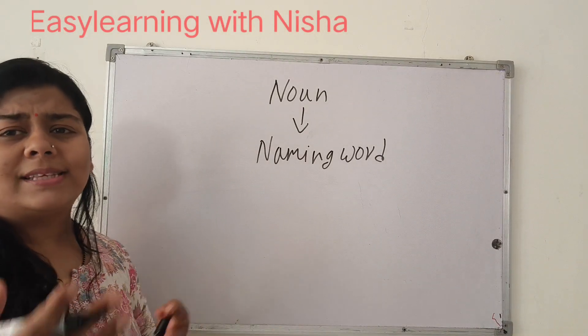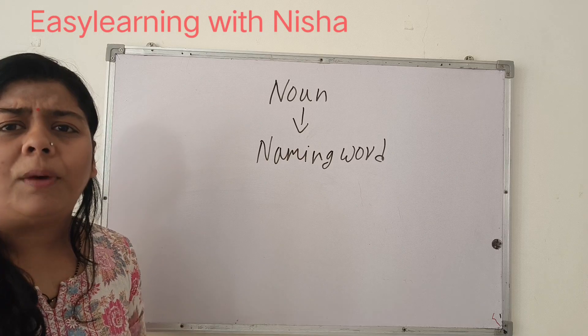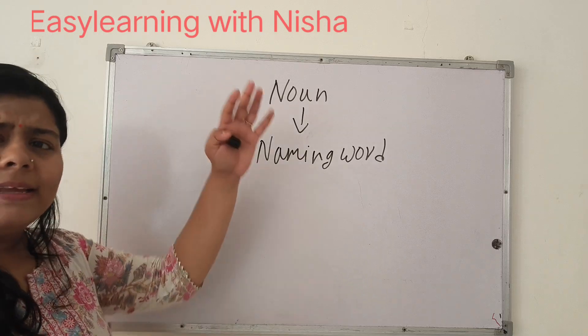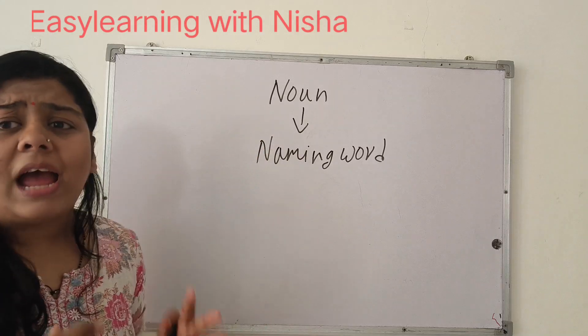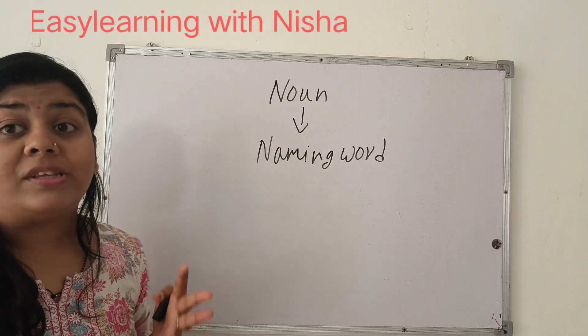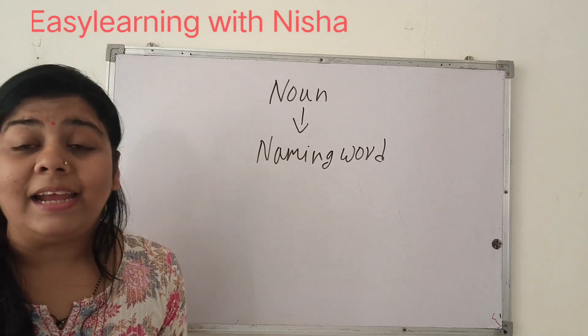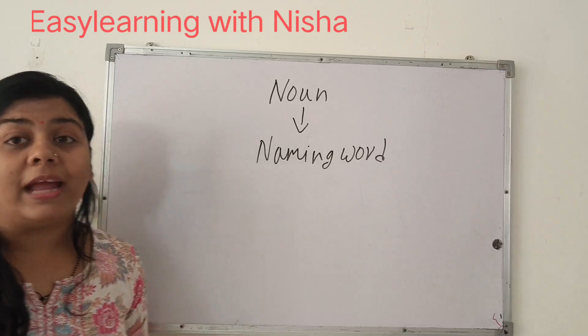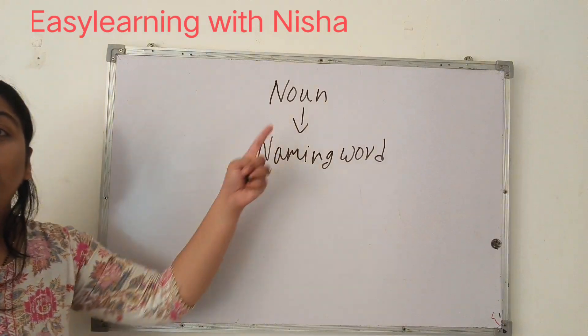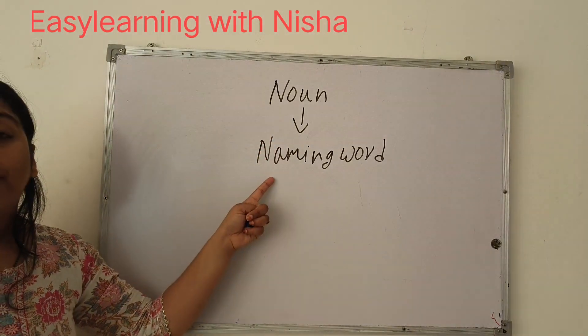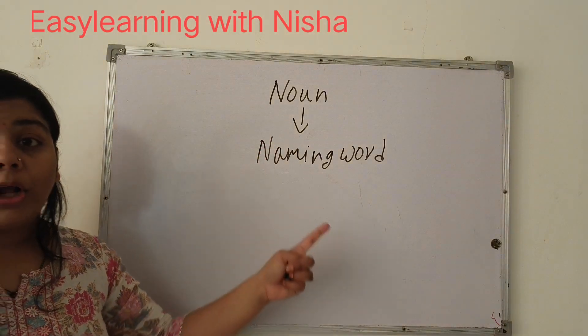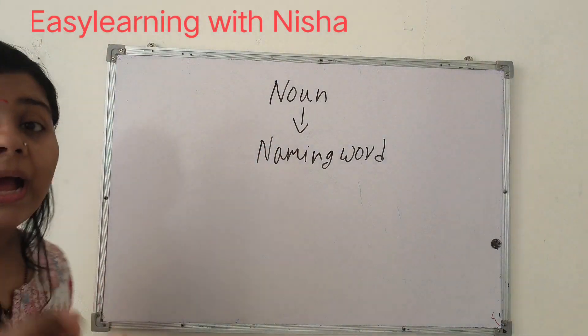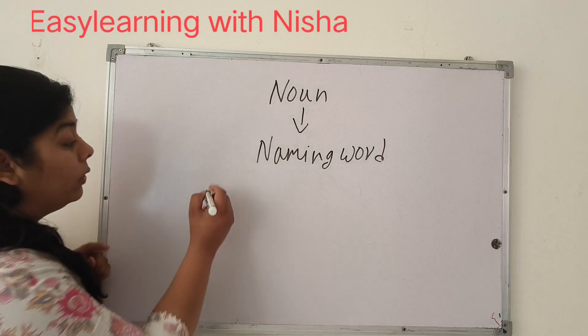You can see me — I'm a woman. You can see there is a mobile, there is a wall. So everything which is present here, which has a name, is called a noun, and we call them naming words also.